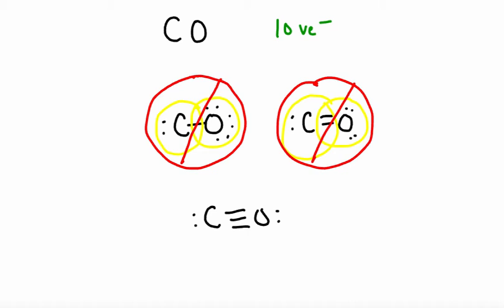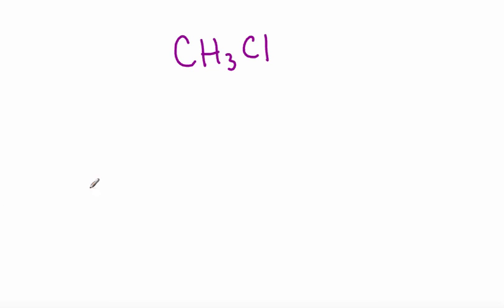If you want to try a few, here we go. Pause the video, run through the steps, and see what structure you get for chloromethane. If you did it correctly, you should have the following structure. And understand that where you put the hydrogens around the carbon does not matter.